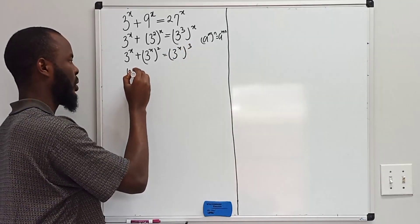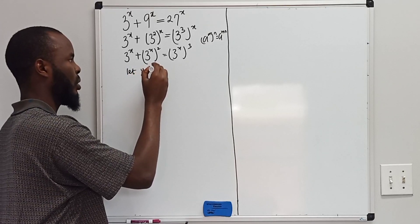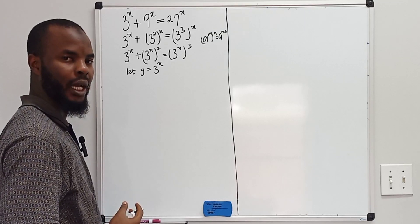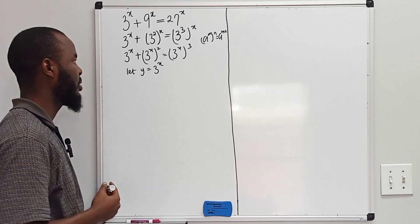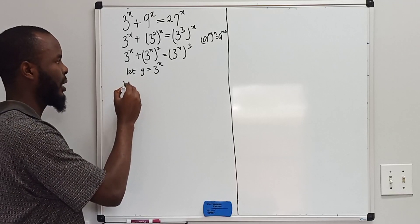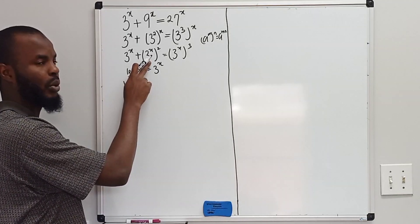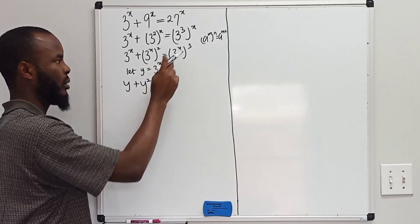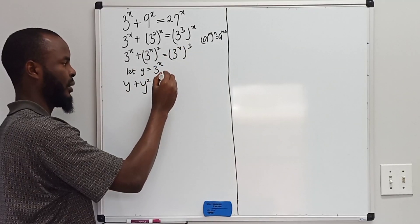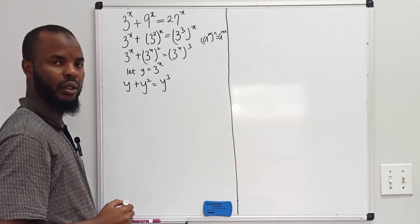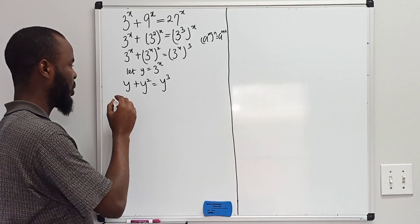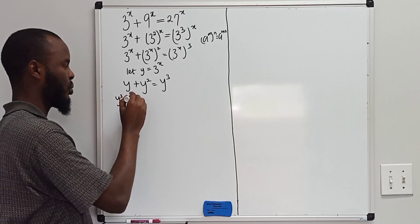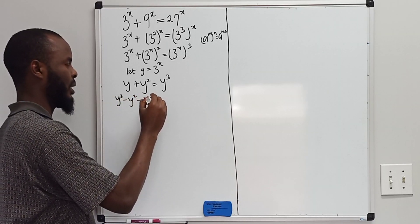Now let y equal 3 to the power of x. I'm going to plug in y wherever we have 3 to the power of x. So doing that, we're going to have y plus y to the power of 2 equals y to the power of 3. Rewriting this equation, we have y to the power of 3 minus y squared minus y equals 0.